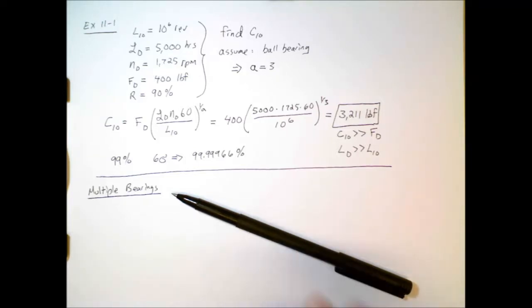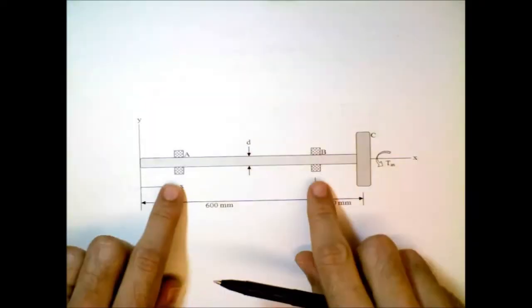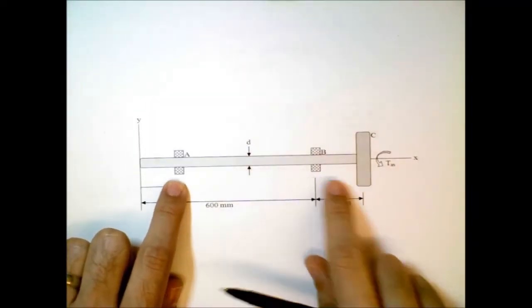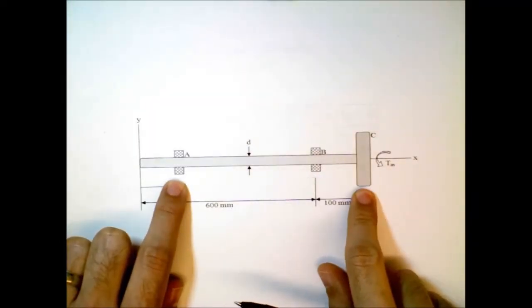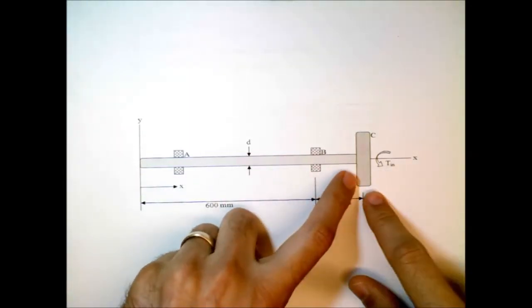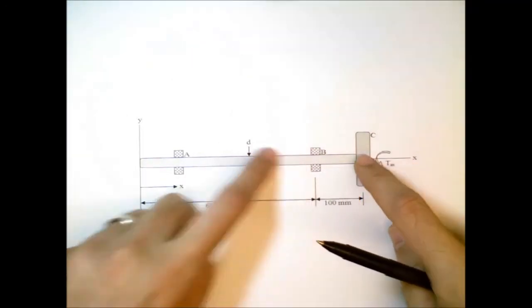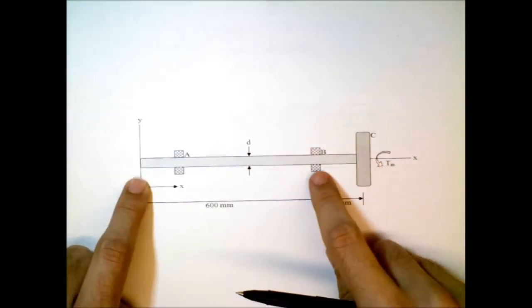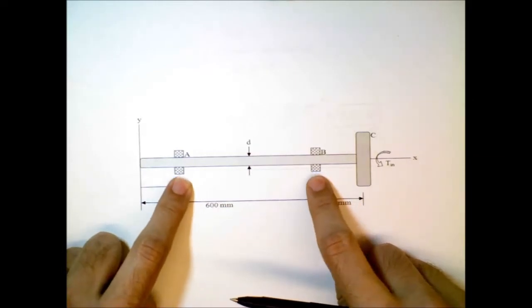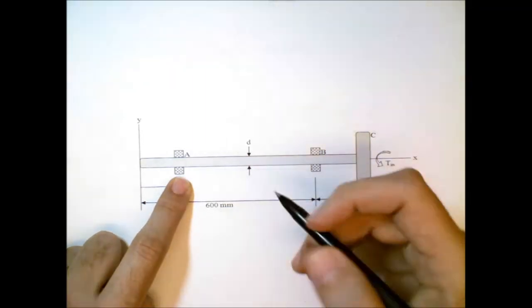Let's look at an example. Suppose we have a shaft that's supported by two bearings, bearings A and B. Here we have a gear and we have some torque that's being provided through another gear that's meshed with this gear C and that produces a bending moment. And we'd like to quantify what is the reliability of the whole system, at least if we're looking at just the bearings.